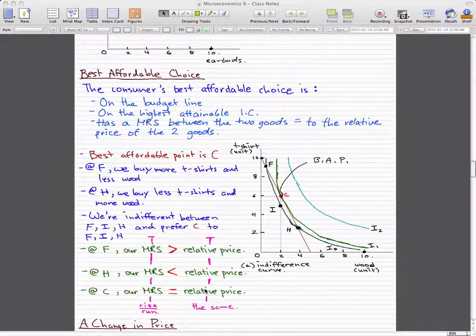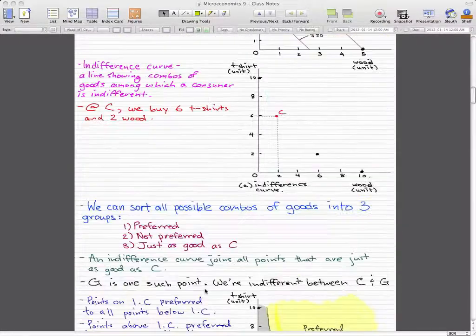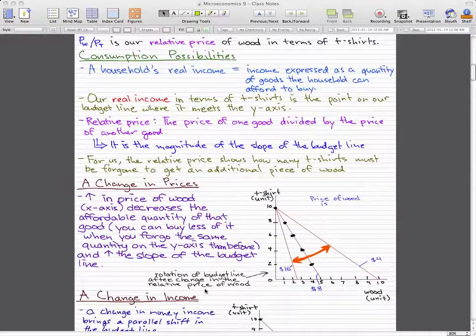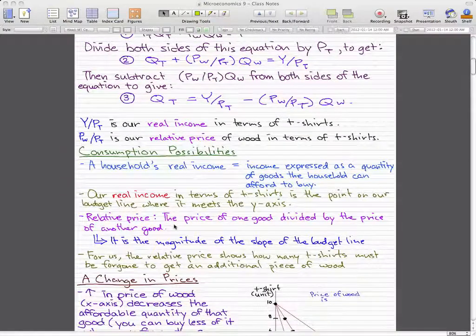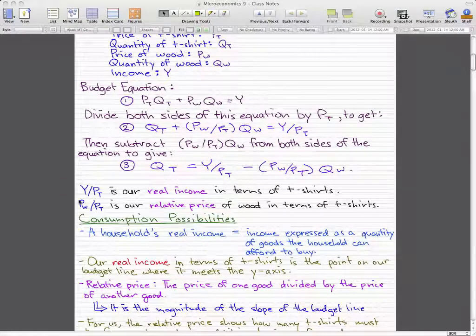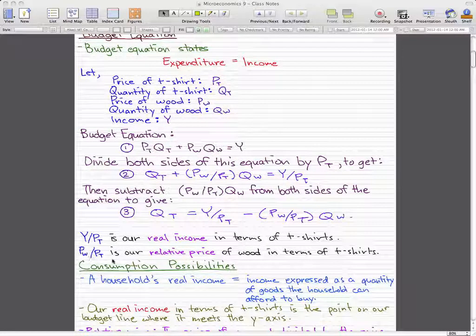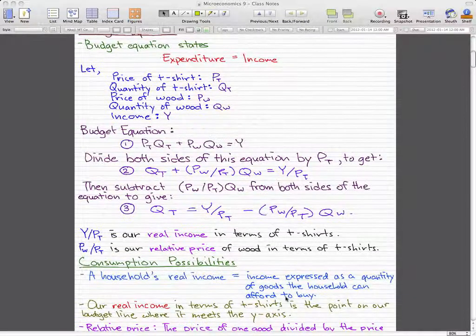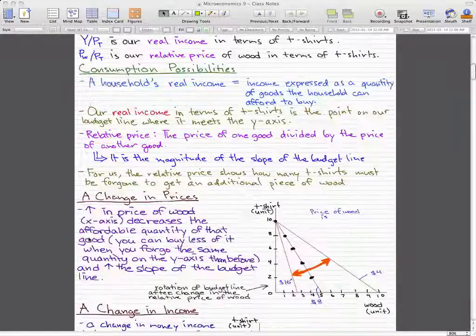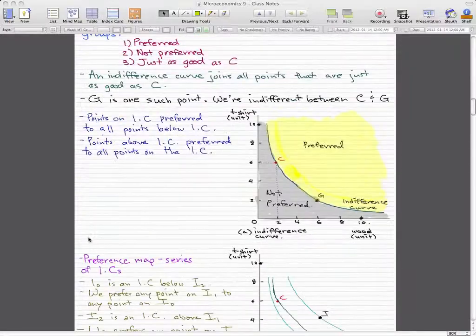Now remember, how we find the relative price is something we did in one of the past videos, which is here. So in this case, Pw over Pt, the price of wood over the price of t-shirts, is the relative price of wood in terms of t-shirts. We would use this as our relative price.